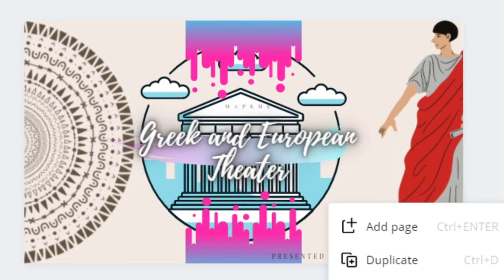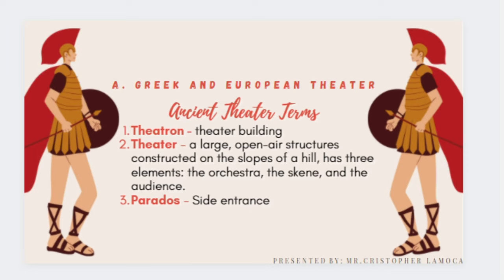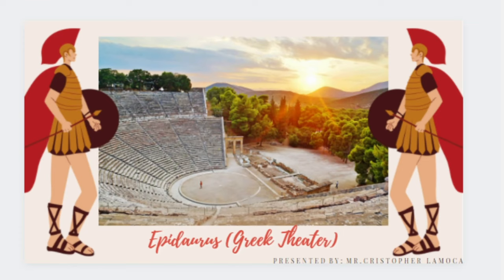Before discussing Greek and European theater, let's unlock the key terms. First is the theatron — the theater building. Second is the theater itself, a large open-air structure constructed on the slopes of a hill, with three elements: the orchestra, the skene (a Greek word from which we get the word 'scene'), and the audience. The third key term is paradox, which means the side entrance.